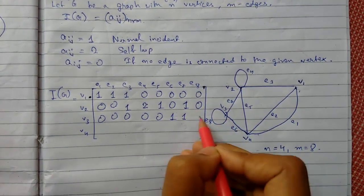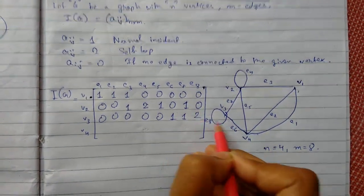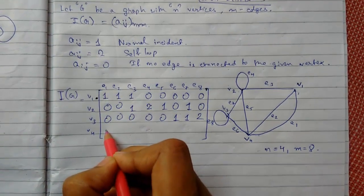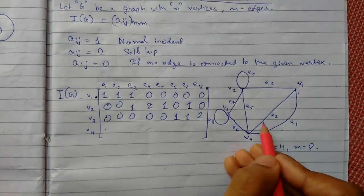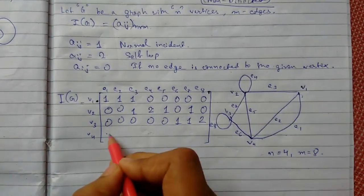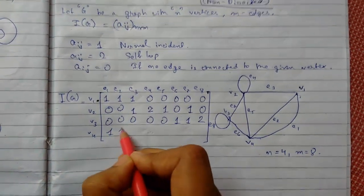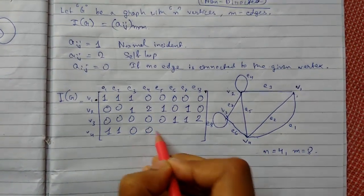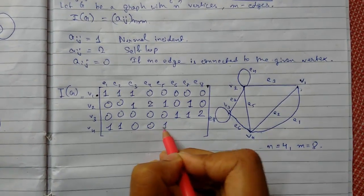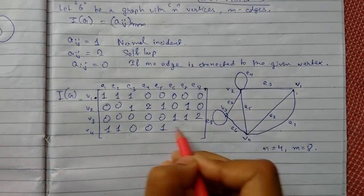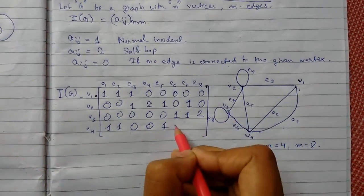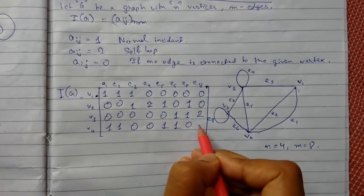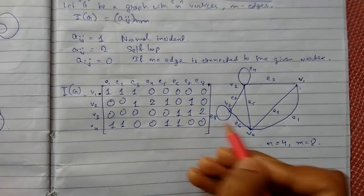E8 is 2 — a self-loop. Then for the next row: E1 is 1, E2 is 2, E3 is 1, continuing with E3 as 0, E4 as 0, E5 as 1, E6 as 1, E7 as 0, and E8 as 0.